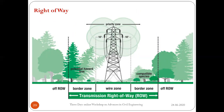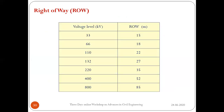Broken wire condition is when one or more wires are cut off — towers must be designed for both normal and broken wire conditions. The right of way image shows the wire zone between cross arm ends, with border zones on either side; together they form the transmission corridor. In India, for a 400 kV line, the total right of way is 52 meters — 26 meters on either side from the tower center.